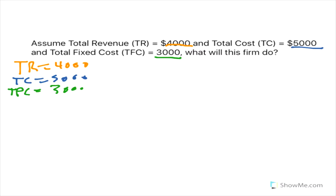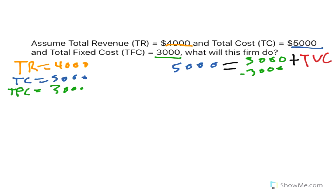Looking back on the previous examples, we know how to set this problem up. Total cost, which is $5,000, equals our total fixed cost plus our total variable cost, which we don't know. We'll subtract $3,000 from both sides, which gives us our total variable cost of $2,000.